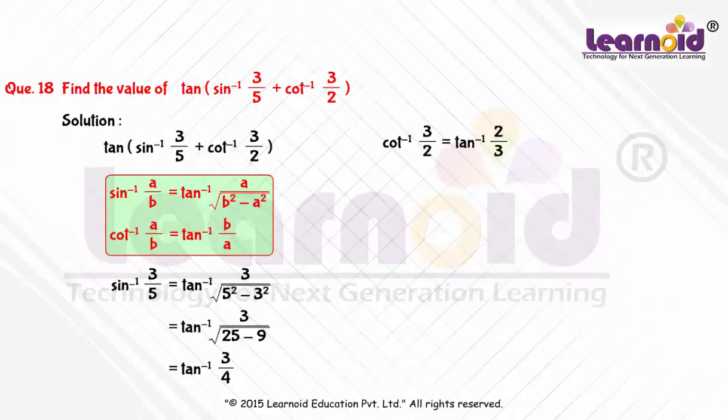Now, substituting these values, we will get tan of tan inverse 3 by 4 plus tan inverse 2 by 3.